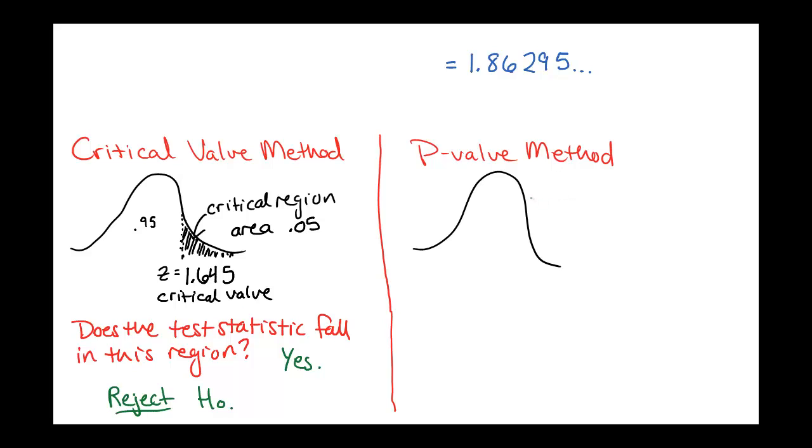For the p-value method, we're still thinking about this as this right-hand tail here, this area to the right. But instead of using a critical value, we're just going to use the test statistic. So in this case, our test statistic was 1.86. And then we're going to look up this value and see what is this area. So look up Z equals 1.86 in our Z-score table.